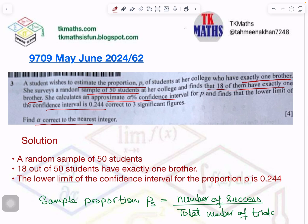She surveyed a random sample of 50 students at her college and finds that 18 of them have exactly one brother. She calculated an approximate alpha percentage confidence interval for p and finds that the lower limit of the confidence interval is 0.244 correct to 3 significant figures.